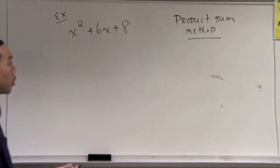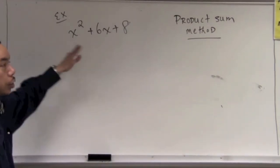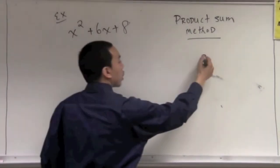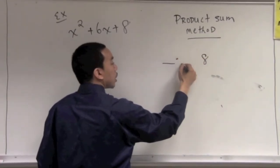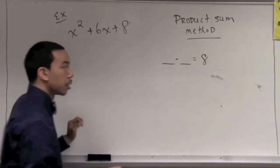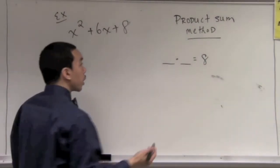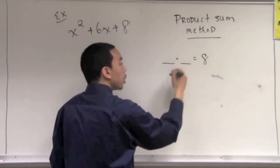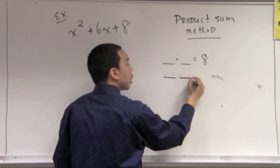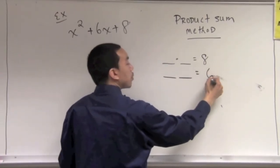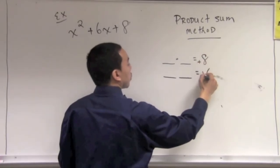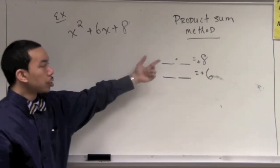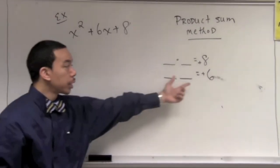So what do we do here? In the product-sum method, we've already identified that the leading coefficient is 1. The next thing is to look at the constant term, which is 8. We ask ourselves: what times what will give us 8? Then we look at the middle term, which is 6, and ask: using those same two factors, if we add or subtract them, will we get a positive 6?